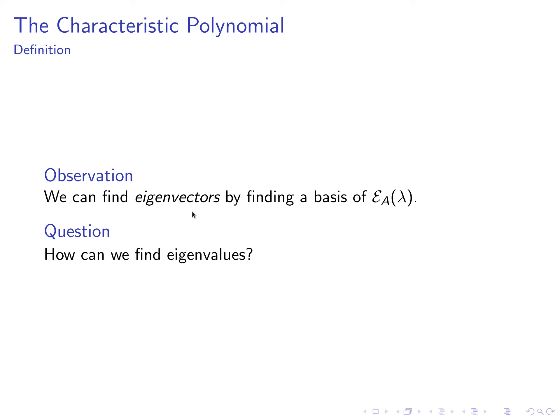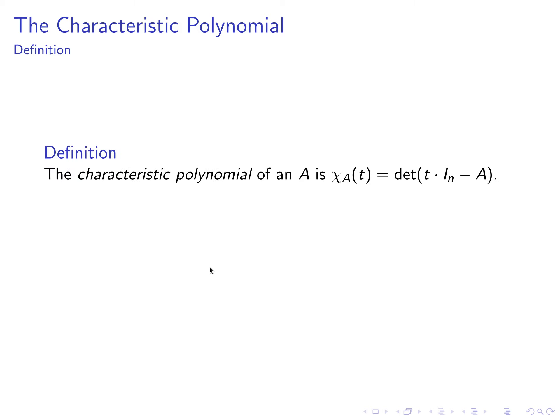The natural question to ask now is: where do the eigenvalues come from? So if we start with a square matrix, how can we calculate the eigenvalues of that matrix? The principal tool that we will use to find eigenvalues is called the characteristic polynomial of the matrix.